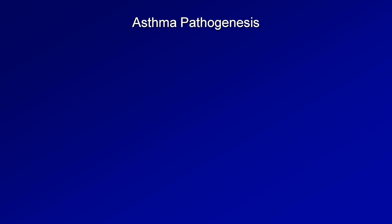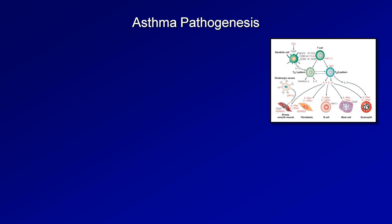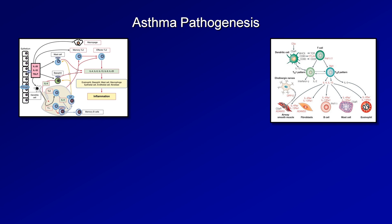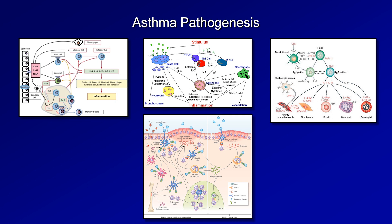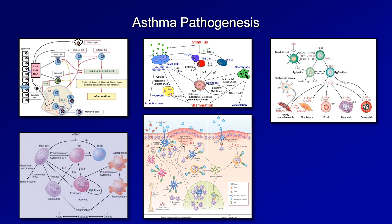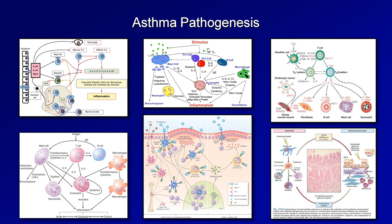As a quick demonstration of that complexity, a Google image search for 'pathogenesis of asthma' yields hundreds of diagrams outlining relationships between cell types like B cells and T cells, with arrows pointing in all kinds of directions and various chemical mediators called interleukins liberally sprinkled throughout. The most frustrating aspect of these diagrams isn't their complexity, but their variety — no two seem to show the exact same process. Some highlight mast cells and IgE antibodies; others highlight the balance between T helper 1 and T helper 2 cells; and each provides a different list of key chemical mediators.